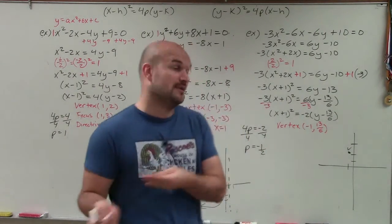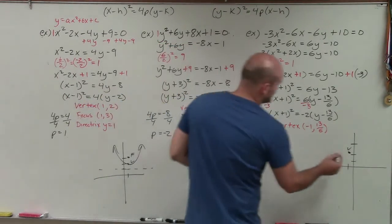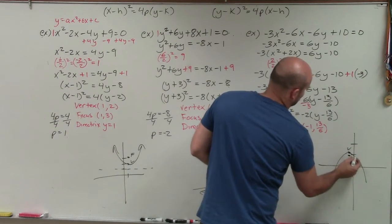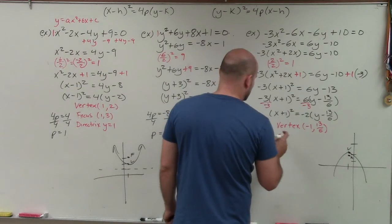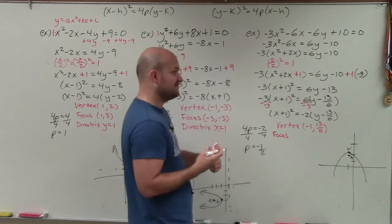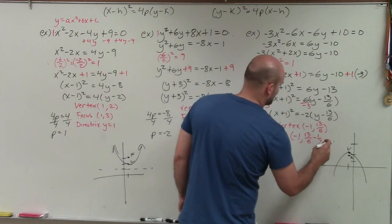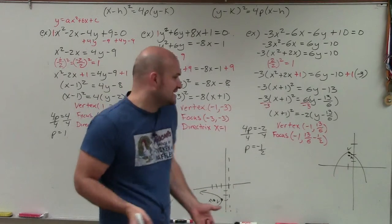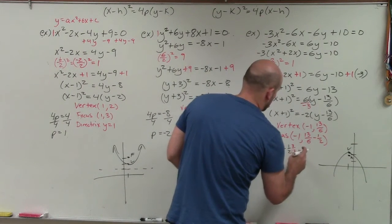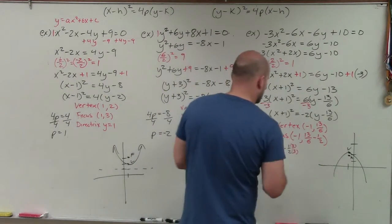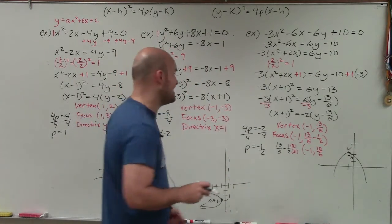The focus is below the vertex by 1/2 unit, so the x-coordinate stays the same at −1, and the y-coordinate is 13/6 minus 1/2. Getting a common denominator: 1/2 = 3/6, so 13/6 − 3/6 = 10/6, which reduces to 5/2. The focus is (−1, 5/2).